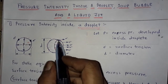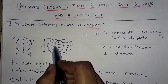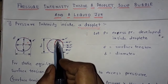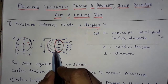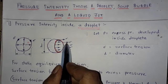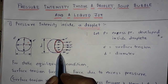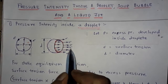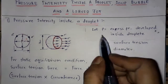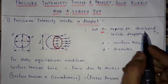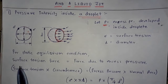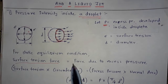Here this is the cross-cut portion of the droplet, and surface tension occurs on this surface — that is on the circumference of the droplet. To derive the formula for excess pressure developed inside a droplet, we need a static equilibrium condition: the surface tension force should be equal to the force due to excess pressure.